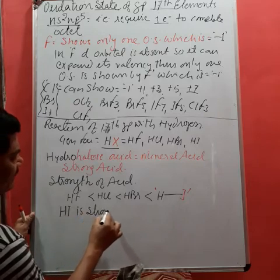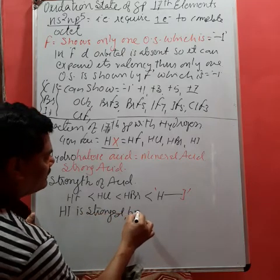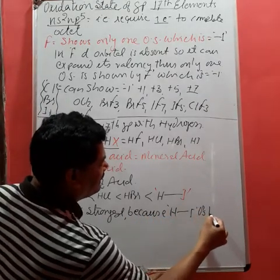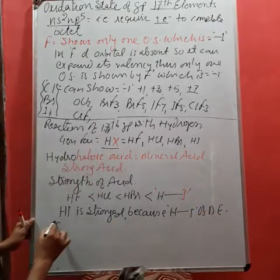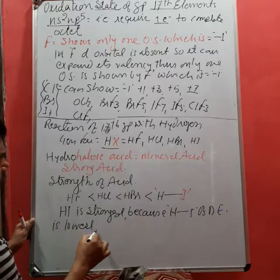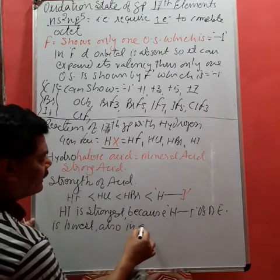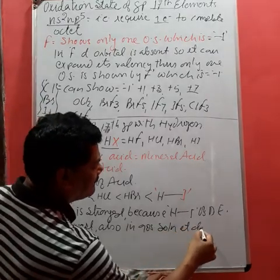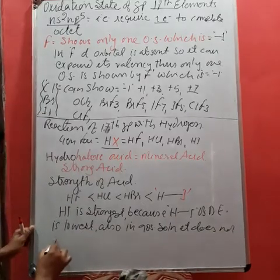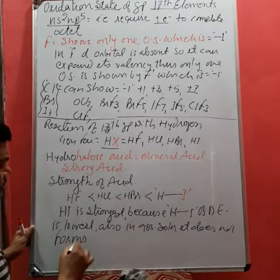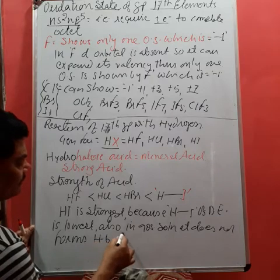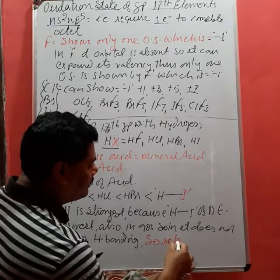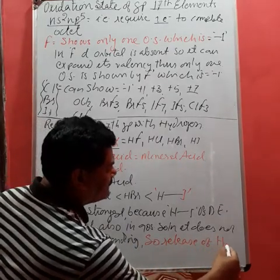Why is HI the strongest acid? Because HI bond dissociation enthalpy is lowest. Also, in aqueous solution, it does not form hydrogen bonding, so release of H⁺ cation becomes easier.